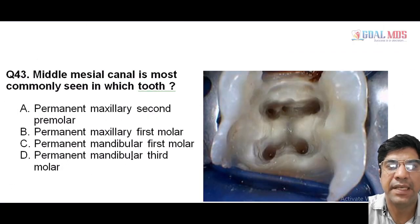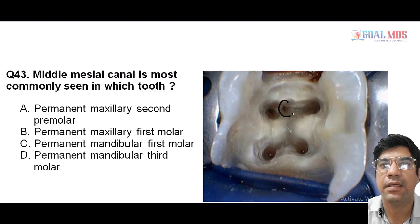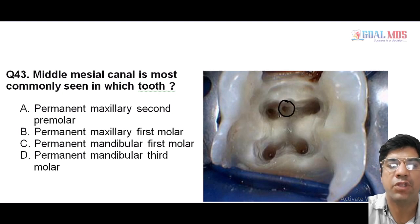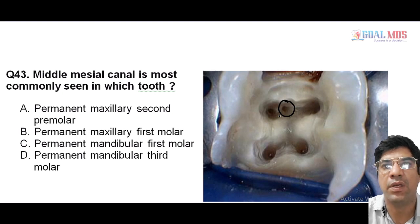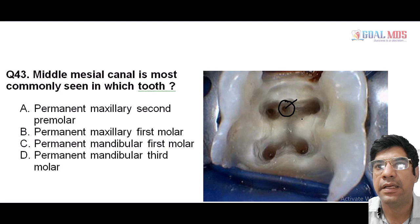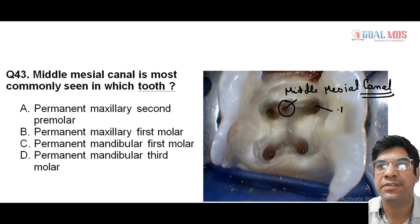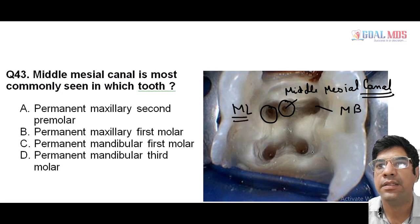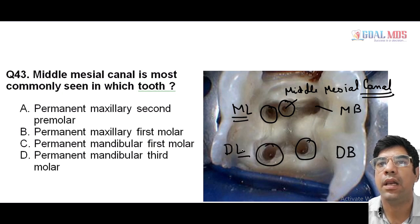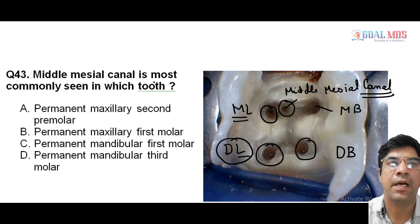The middle mesial canal is most commonly seen with the permanent mandibular first molars. In the mandibular first molar, the mesial canals are the mesiobuccal and mesiolingual canals, plus the middle mesial canal, along with the distobuccal canal and distolingual canal. The middle mesial canal is most commonly seen with permanent mandibular first molars.